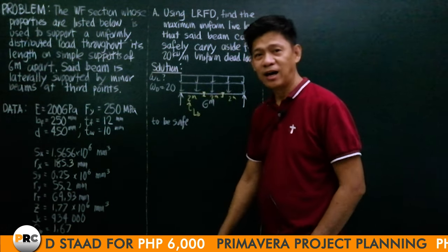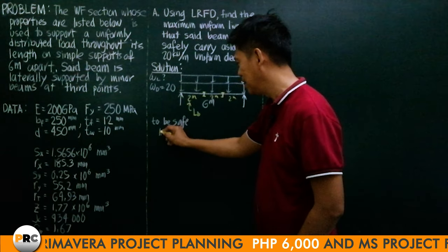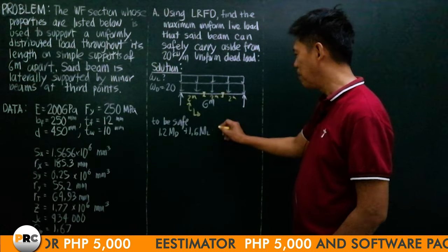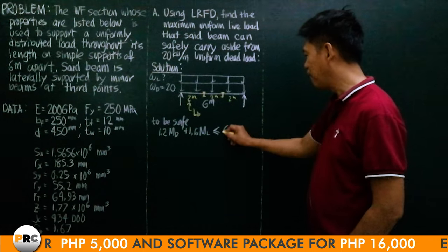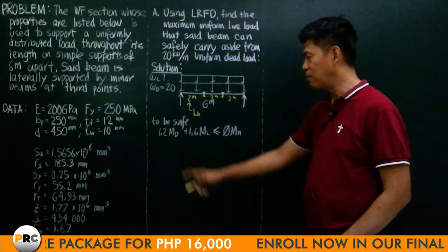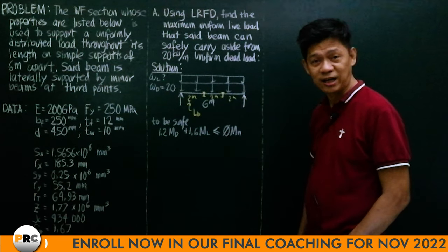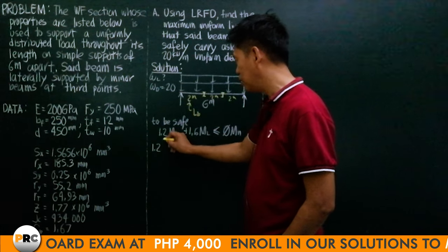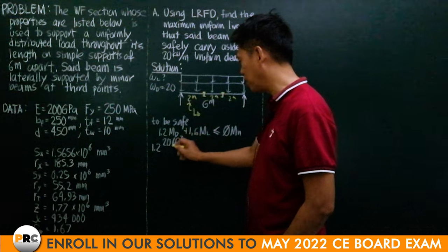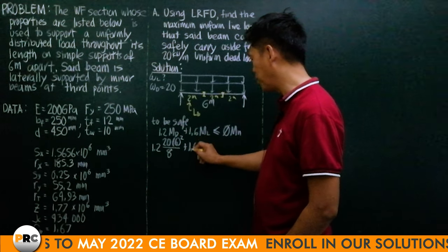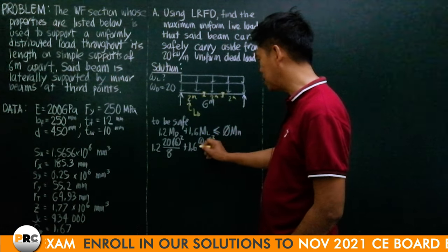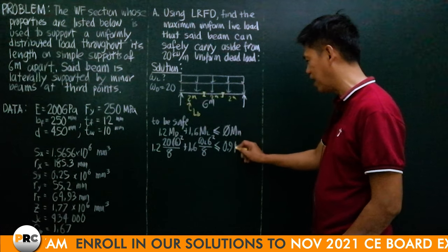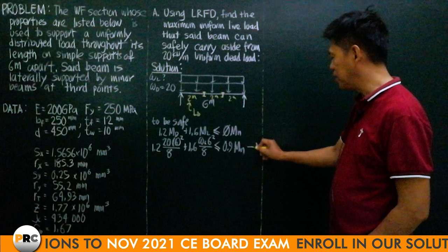Using LRFD: Mu (actual or applied) = 1.2·M_dead + 1.6·M_live must be less than or equal to φMn. The moment due to uniform load is wL²/8, so this becomes 1.2 × 20 × 6²/8 plus 1.6 × w_live × 6²/8, and this must be less than or equal to φMn, where φ for moment is 0.9 times Mn. Call this Equation 1.